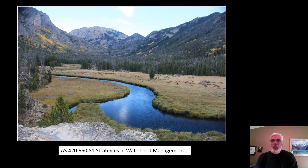A watershed, as you probably know, is an area of land from which all the water drains to one point. The flow of water and the materials it carries through a watershed has been likened to nature's circulatory system. In this way, a watershed integrates the natural and human resources that share that water.